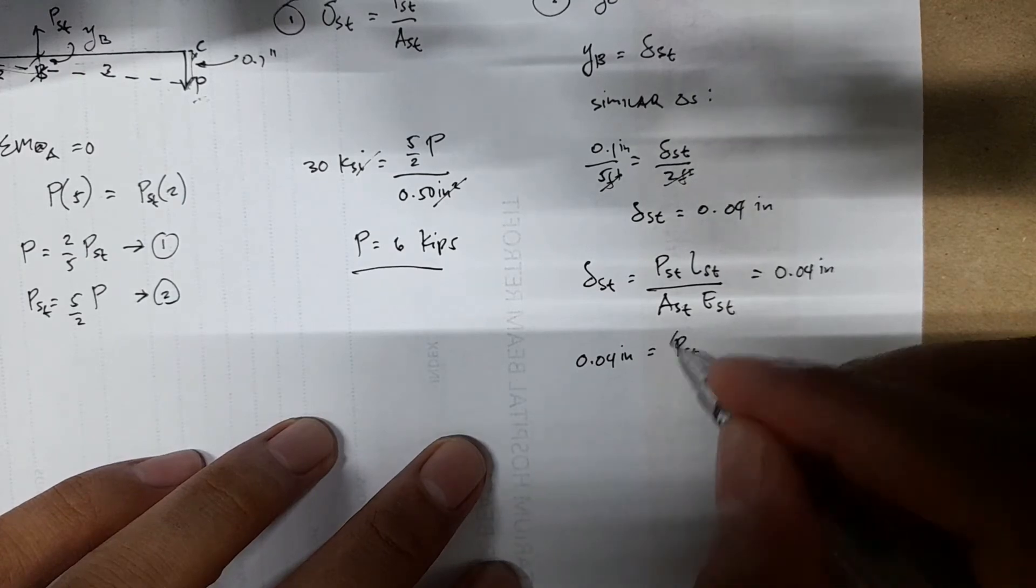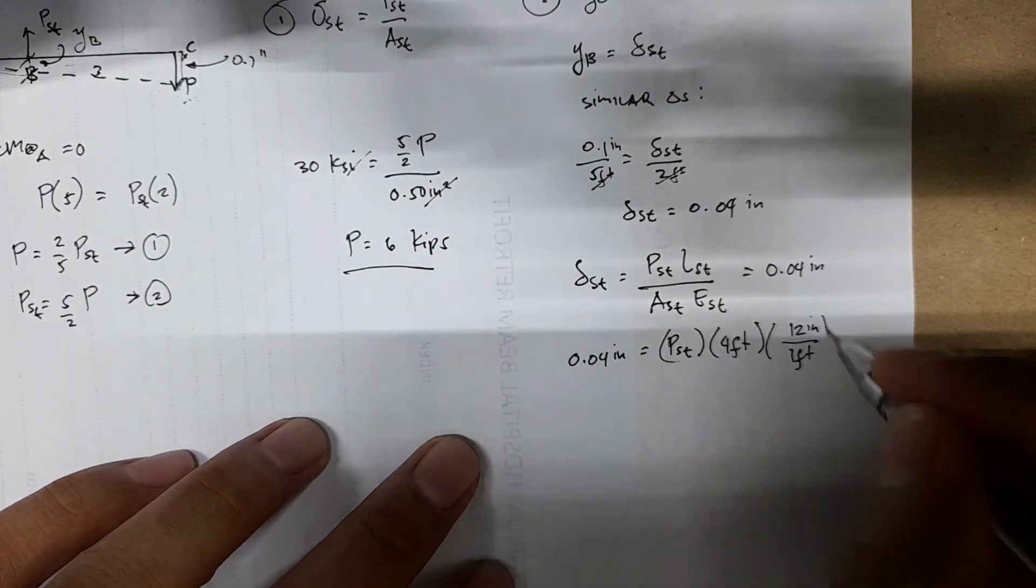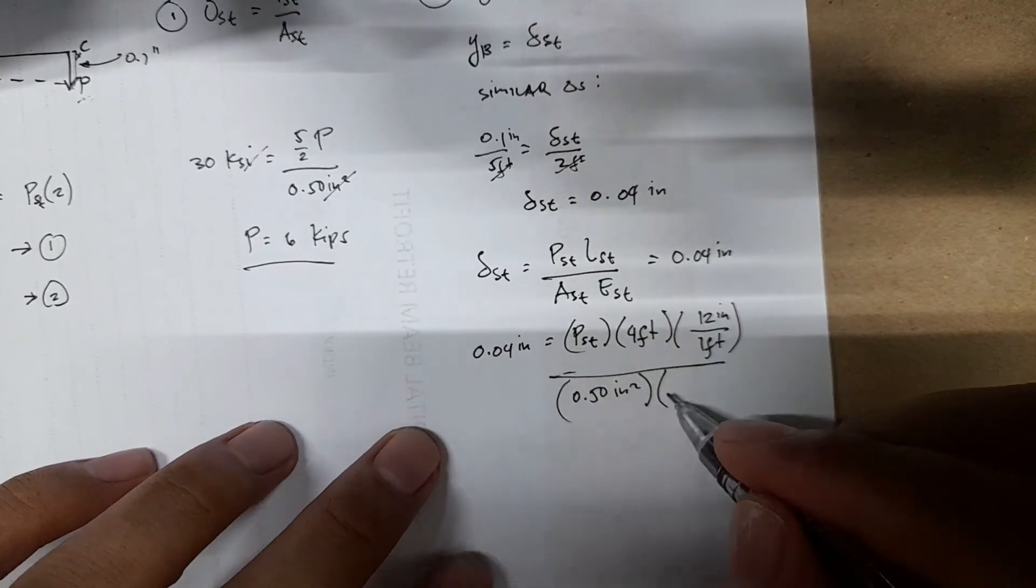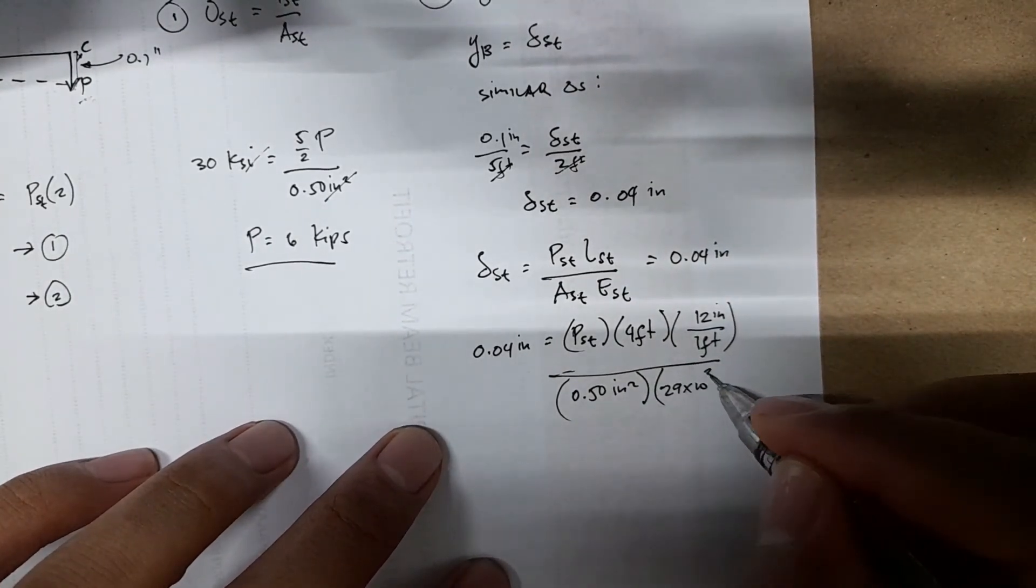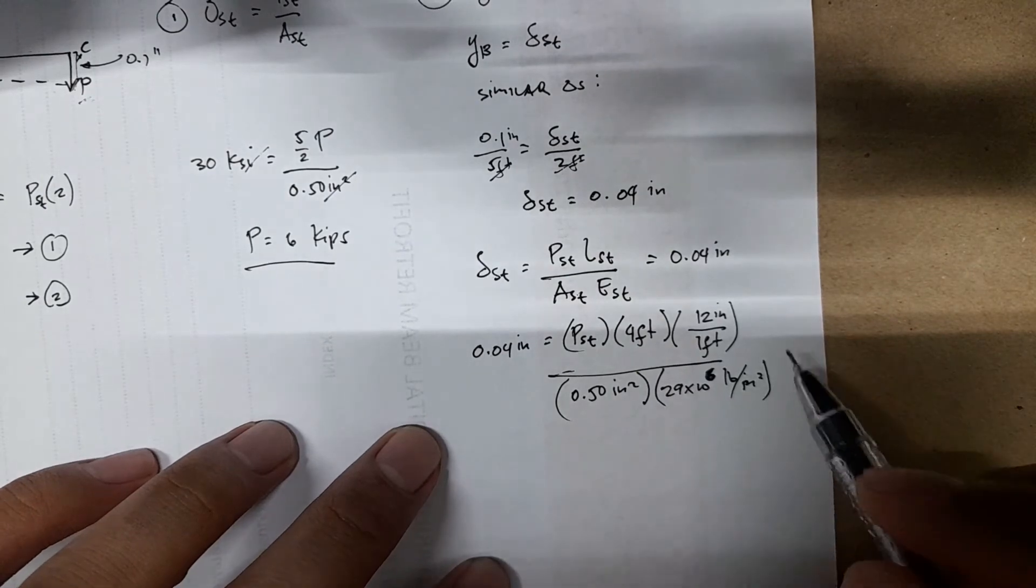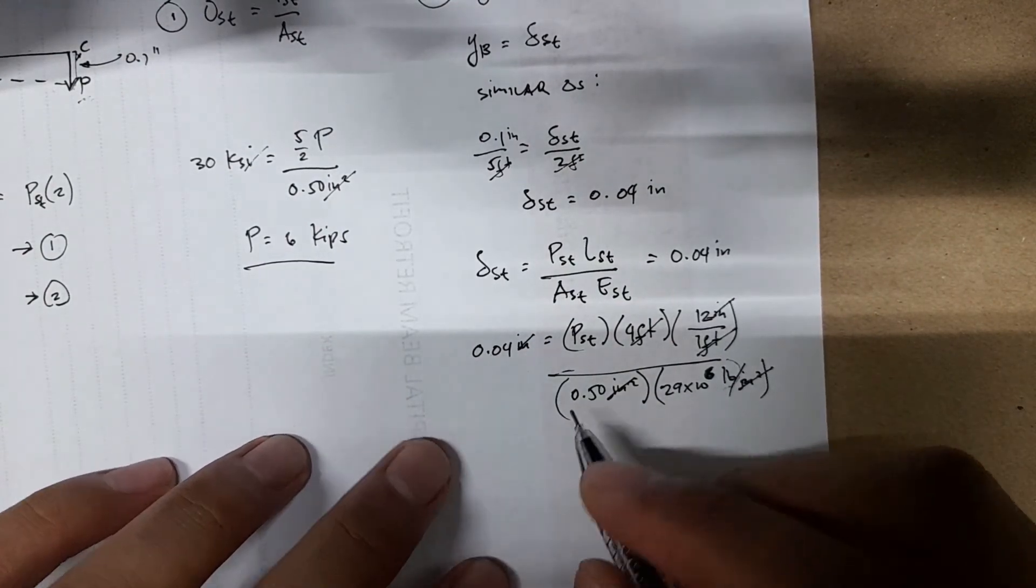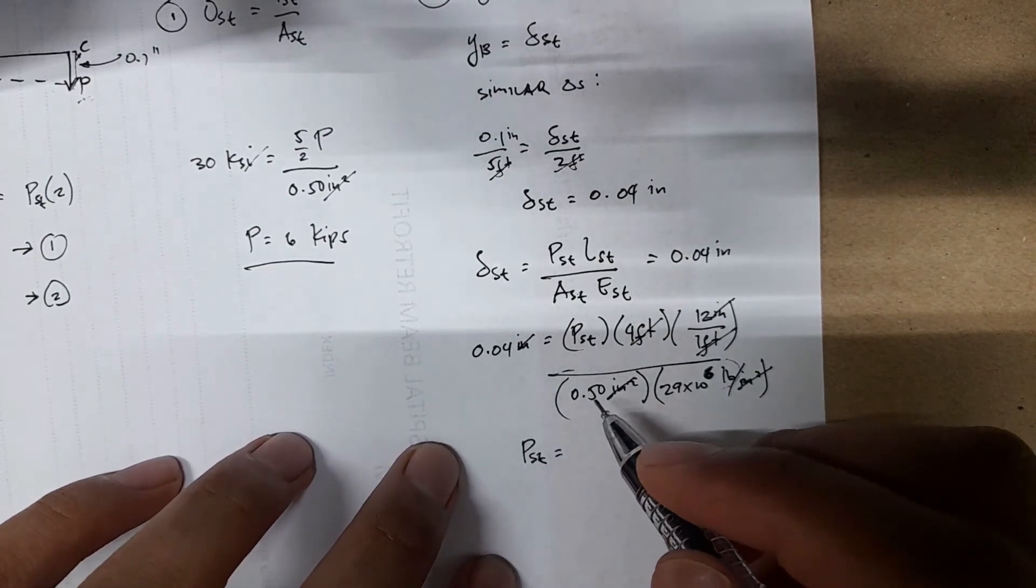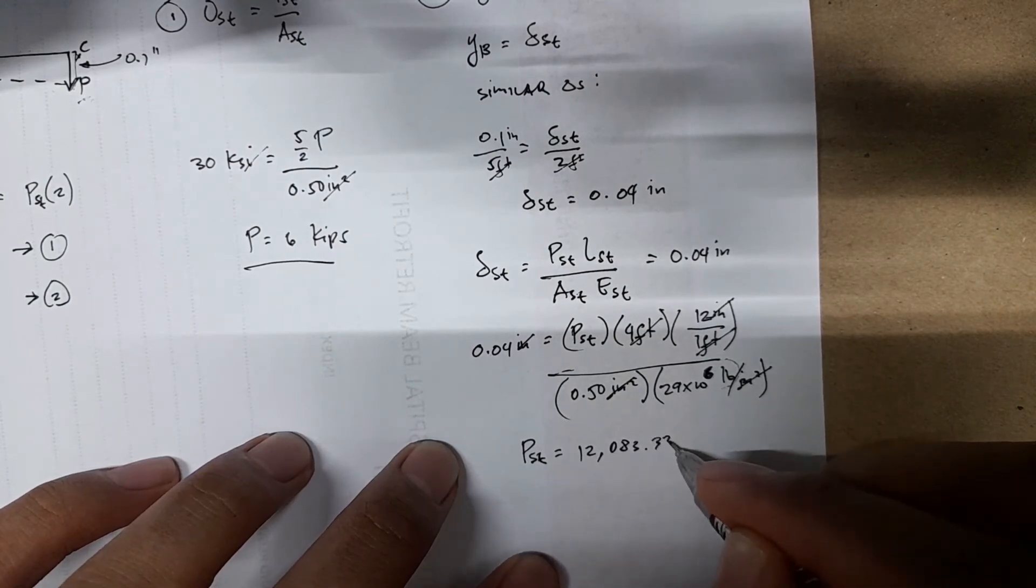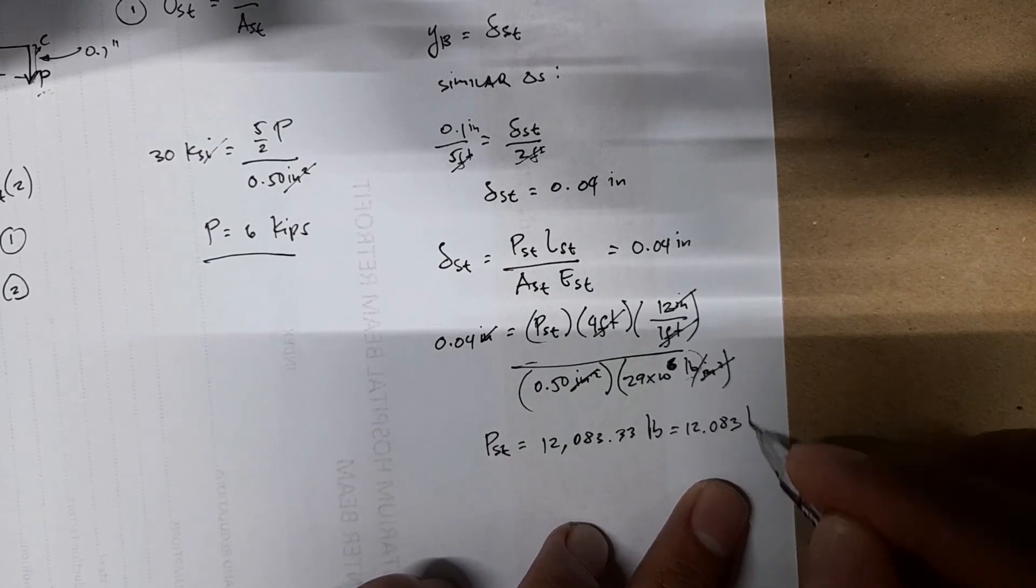You have to convert, so 12 inches is in 1 foot. Then you have the area, which is 0.50 inches square, and E, which is 29 times 10 to the 6 pounds per inch square. The inches cancel with inches, feet with feet. We have pounds left. PST equals 12,083.33 pounds, or 12.083 kips.